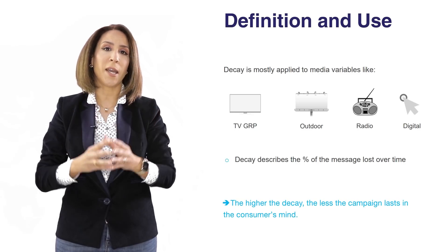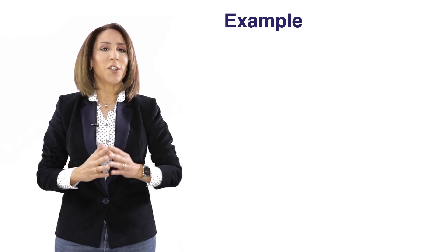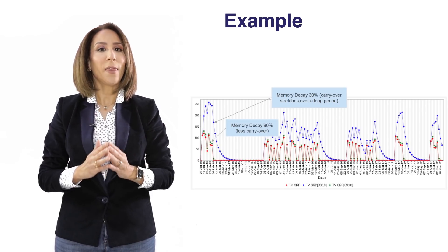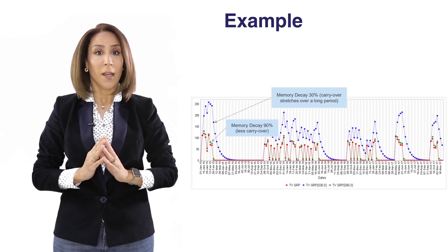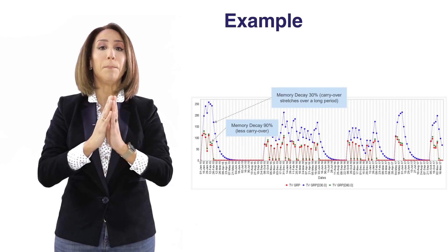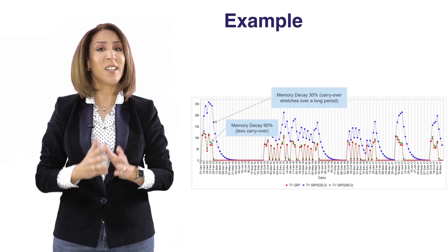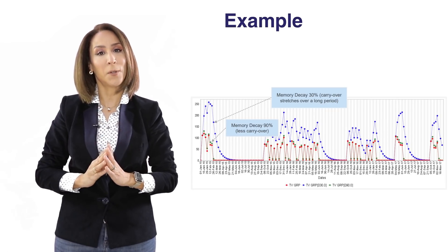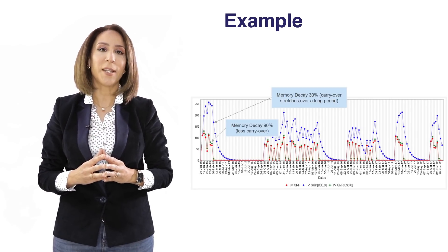We need to understand that the higher the decay, the less that message will stay in the consumer's mind. In this illustration, we have created two decays: 30% and 90%. We can clearly see from this graph that for the 90% decay, the carry-over effect is much shorter than for the 30%. In the context of the 30%, we assume that 30% of the message is being lost week on week, whereas in the 90% context, 90% of the message is being lost every single week. So the carry-over created by the 30% decay is much higher than the carry-over created by its 90% counterpart.